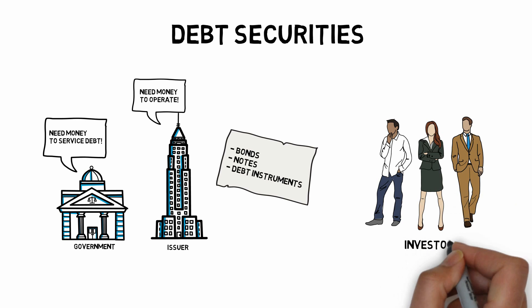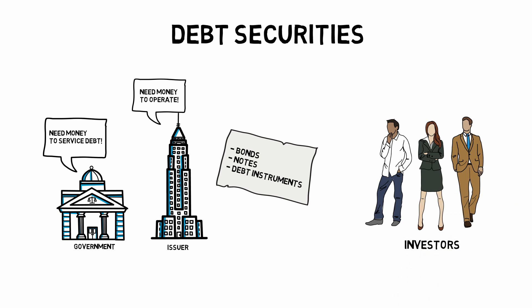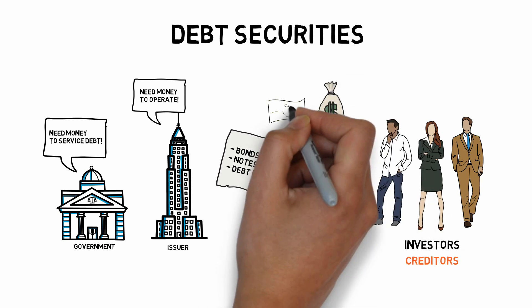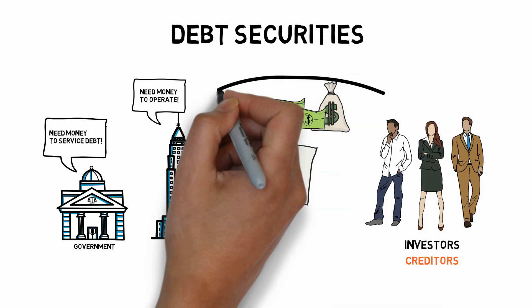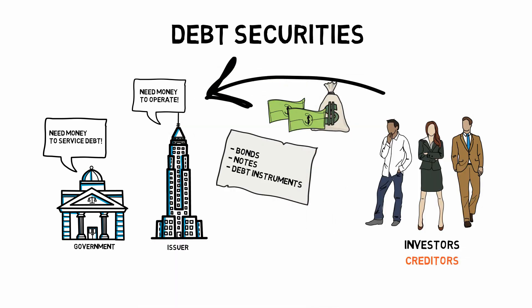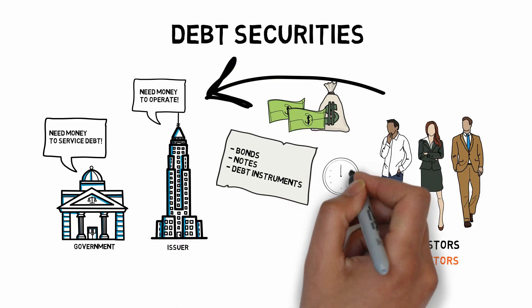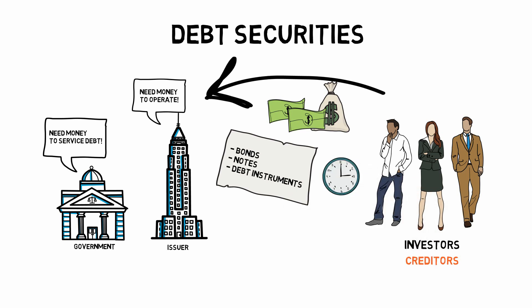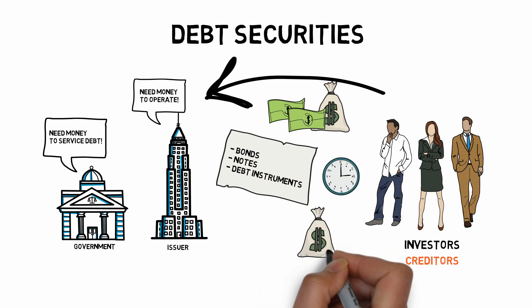Investors who purchase debt securities are also called creditors. Creditors lend money to the issuer for a specific time period. The issuer will typically make interest payments over the life of the loan.